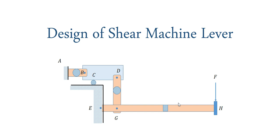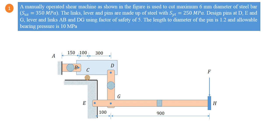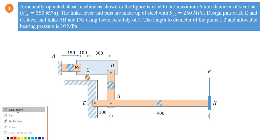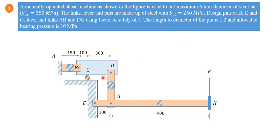Design of Shear Machine Lever. The problem involves a manually operated shear machine used to cut a maximum 6 mm diameter steel bar. The ultimate shear strength SUS is 350 MPa. The links, lever, and pins are made of steel with SYT of 250 MPa. We must design pins at D, E, and G, and also the lever and links AB and DG, using a factor of safety of 5. The length-to-diameter ratio of the pin is 1.2 and allowable bearing pressure is 10 MPa.